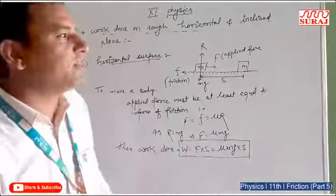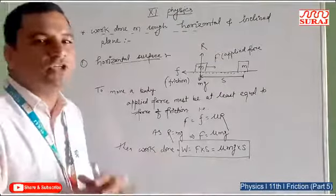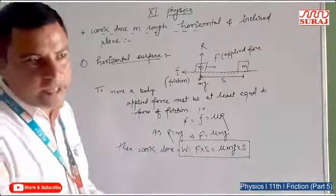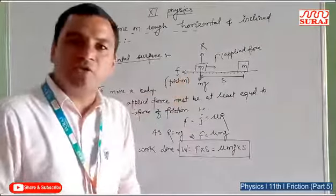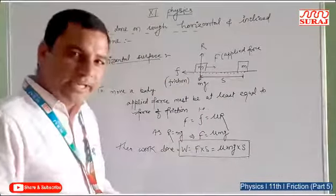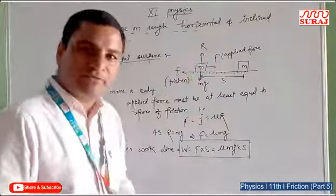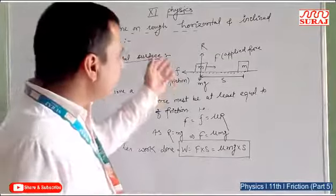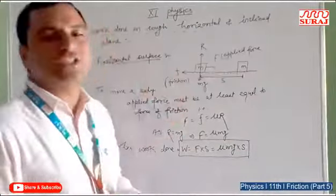Work done in moving a body on a rough horizontal surface. A rough horizontal surface means there is friction between the surfaces of two bodies, which acts at the point of contact. Consider a body of mass M placed on a rough horizontal surface. The force acting on it is vertically downwards, that is the weight mg, and the normal reaction R given by the surface.